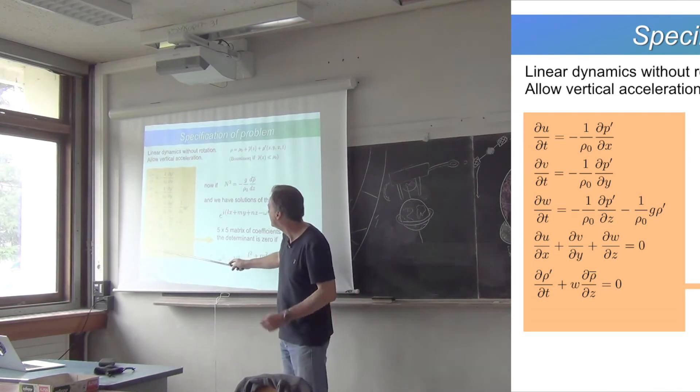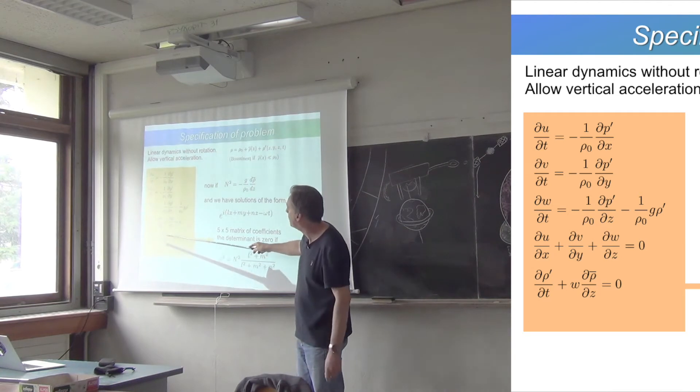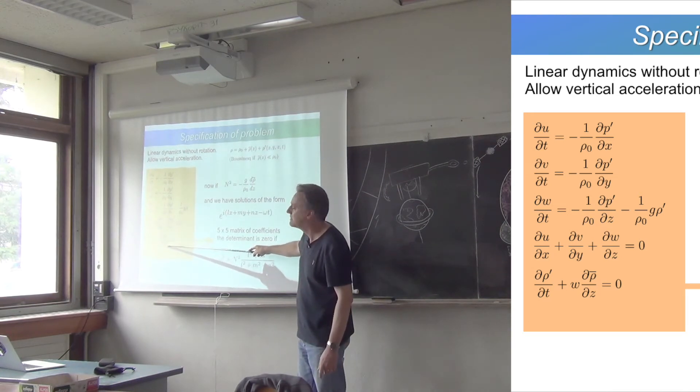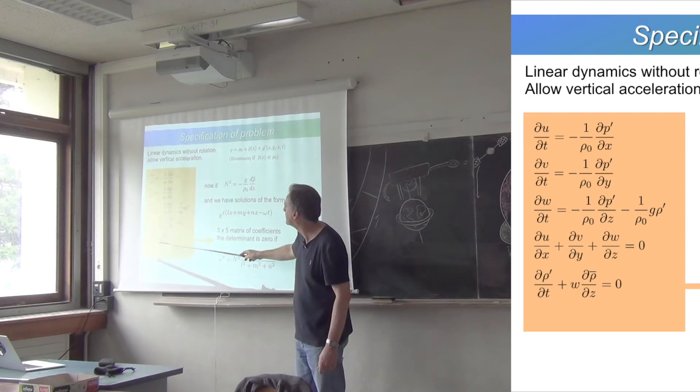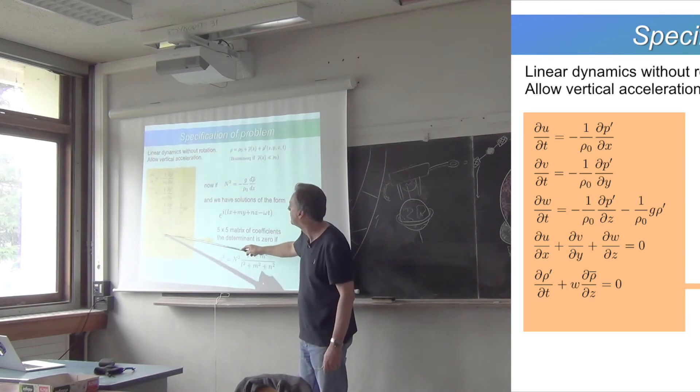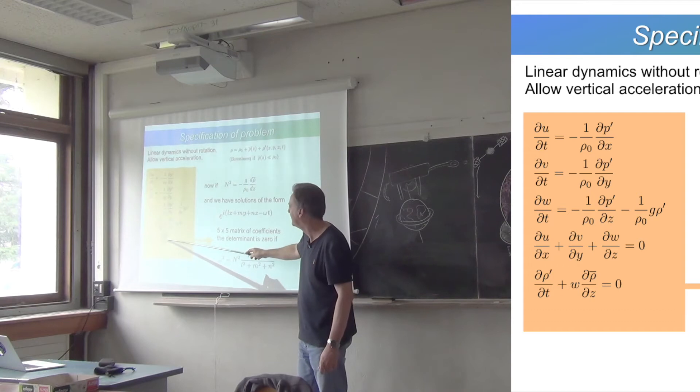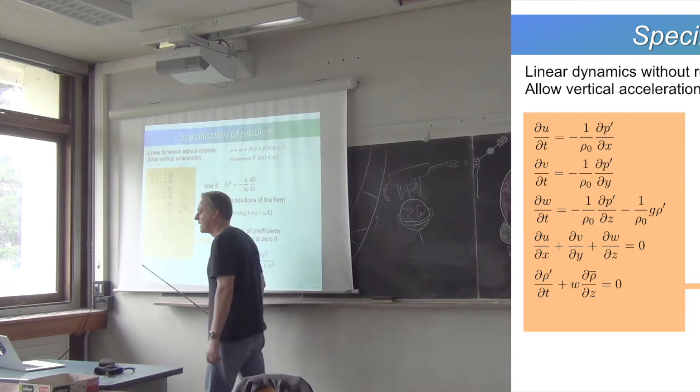And then continuity, and this is the density equation. The rate of change of density depends on the vertical advection of the basic state stratification. So, that's a linear term because it's just got w there, and this ρ bar is part of the basic state. All these terms are linear. So, how do we solve that?